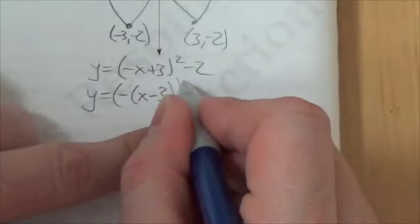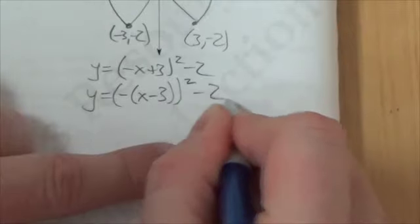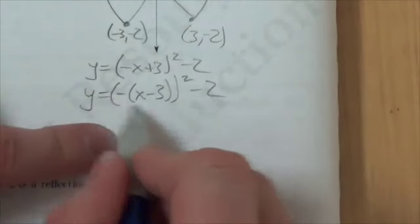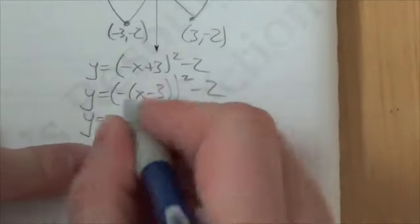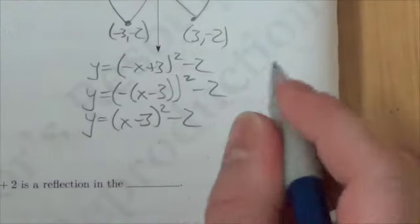Now I can square both parts underneath these parentheses, and when I square the negative 1 it becomes positive 1, but I'm left with x minus 3 being squared minus 2.